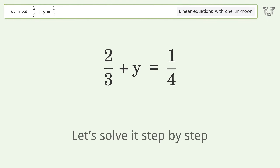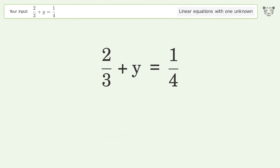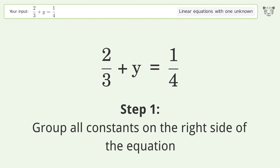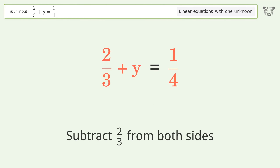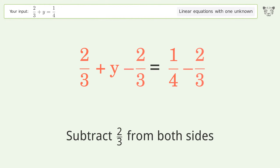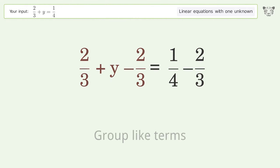Let's solve it step by step. Group all constants on the right side of the equation, then subtract 2 over 3 from both sides and group like terms.